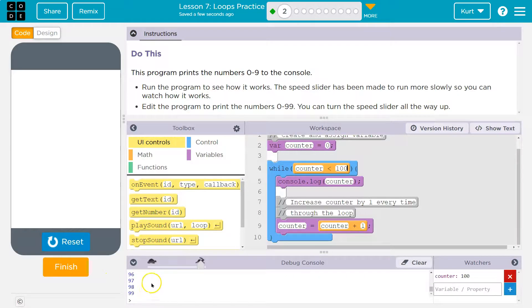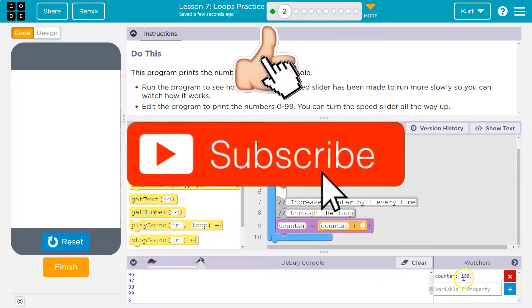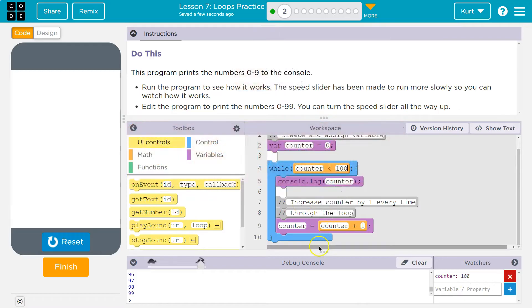Awesome. Notice over here, it says counter is equal to 100, but we only got printed through 99 because it hit the bottom, says 100 is not less than 100, and keeps going. It never prints that 100. All right. Onward.